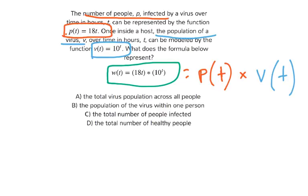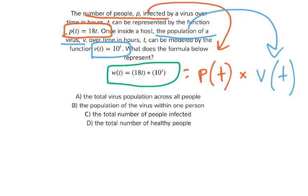So that means we're multiplying the number of people infected by the population of the virus inside a certain host. We have the total number of people, and then we're multiplying it by how fast the virus is spreading within each person. So that is going to give us the total virus population across all people — not just the population of the virus within one person, because we're multiplying by the number of people. It's not the total number of people infected; that's already our p of t equation.